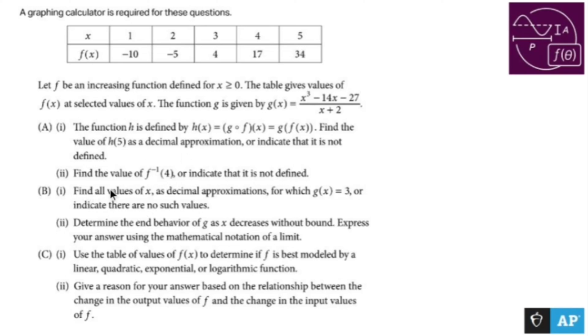Same exact problem doing B now. Find all the values of x as decimal approximations for which g(x) equals three. So here's g(x). I'm going to write out three equals, and this is B1. Three equals x³ - 14x - 27 over x + 2. Now, this is what I would do.